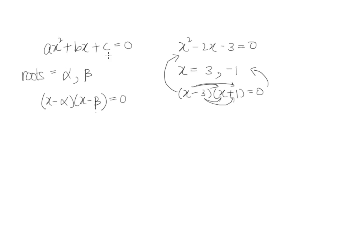So a quadratic equation typically looks like this. And if you have two roots called alpha and beta, take into consideration that now your alpha is like the 3 here and the beta is like the negative 1 here.